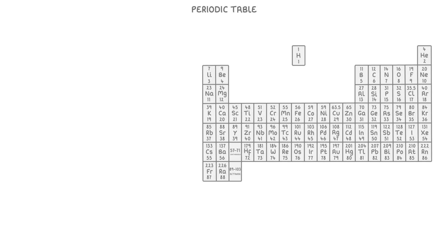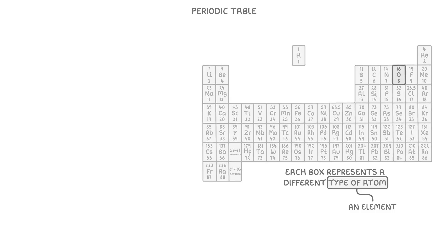Now we take a look at it in detail in another video, but this here is the periodic table. And each box in the table represents a different type of atom, which we call an element. So this box here represents the element oxygen, and this one is the element lithium.